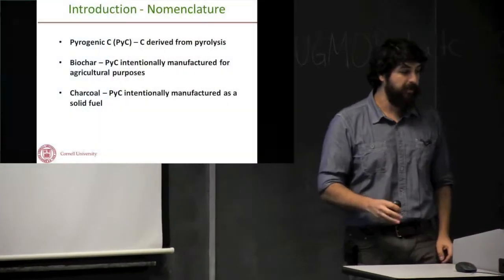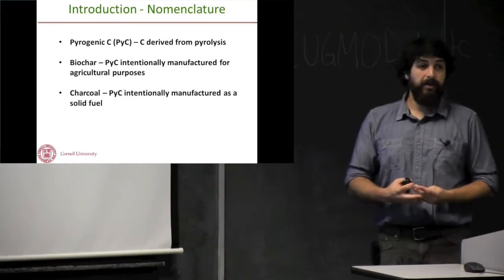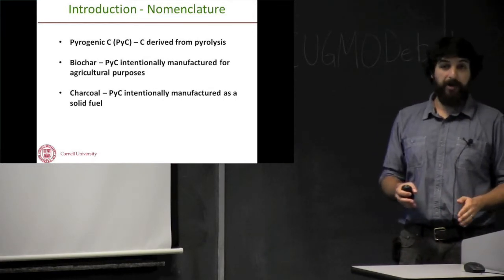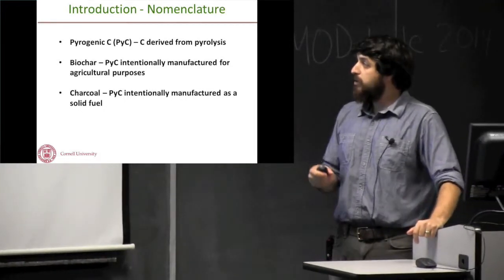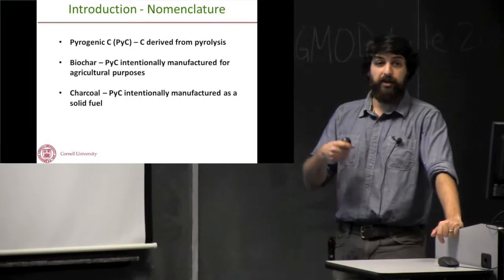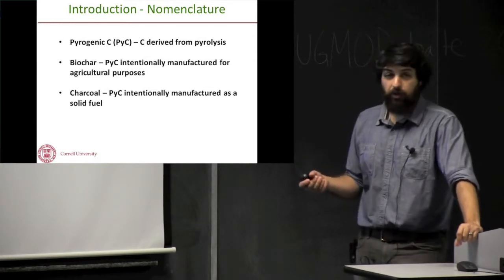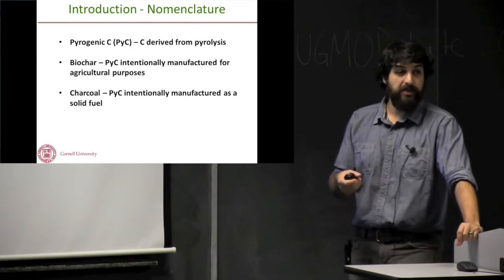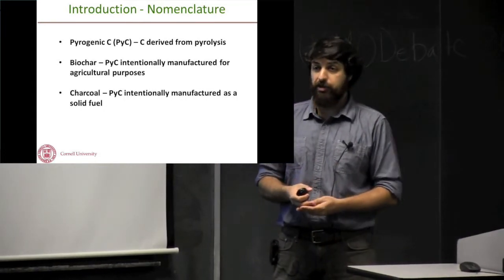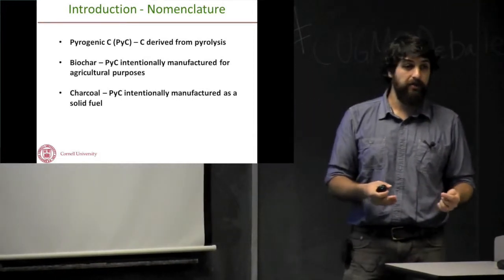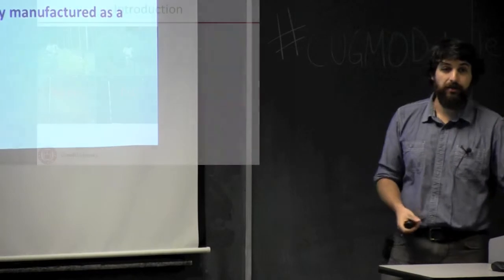As an introduction, I want to frame some of the nomenclature because I do skip around a little bit depending upon the application. Pyrogenic carbon is carbon that has been derived from the process of pyrolysis — it's an overarching name for different types. Biochar is pyrogenic carbon intentionally manufactured for agricultural purposes. Charcoal is pyrogenic carbon intentionally manufactured as a solid fuel. Pyrogenic carbon is also used as 'black carbon' in some literature, but we differentiate it by removing soots and aerosols.